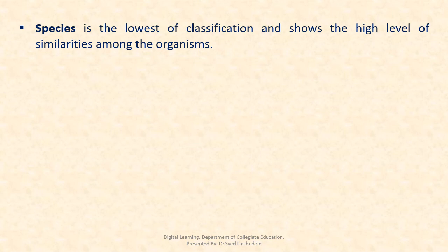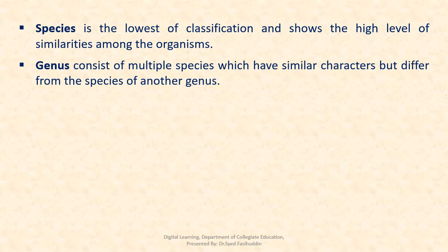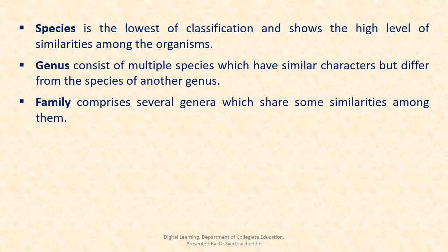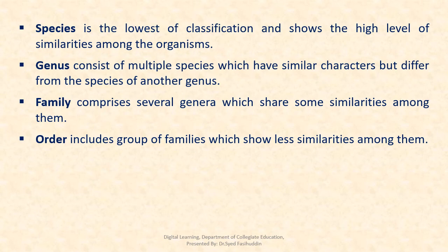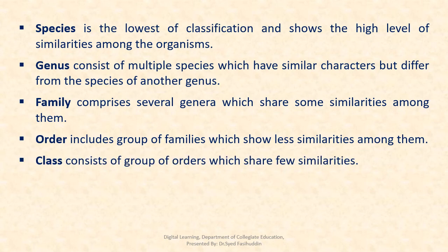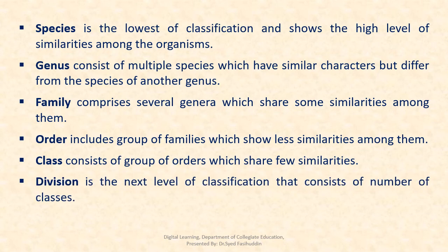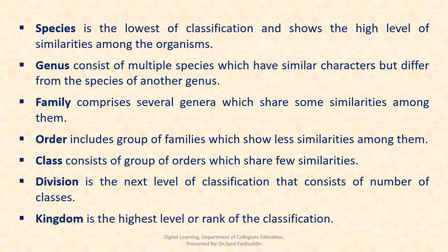Species is the lowest level of classification and shows the highest level of similarity among organisms. The genus consists of multiple species with similar characters but differing from species of another genus. Family comprises several genera sharing some similarities. Order includes groups of families showing less similarity. Class consists of groups of orders sharing few similarities. Division consists of a number of classes. Kingdom is the highest level or rank of the classification system.